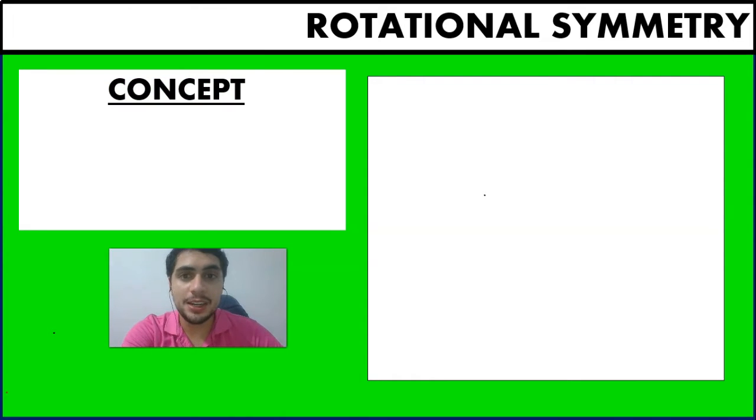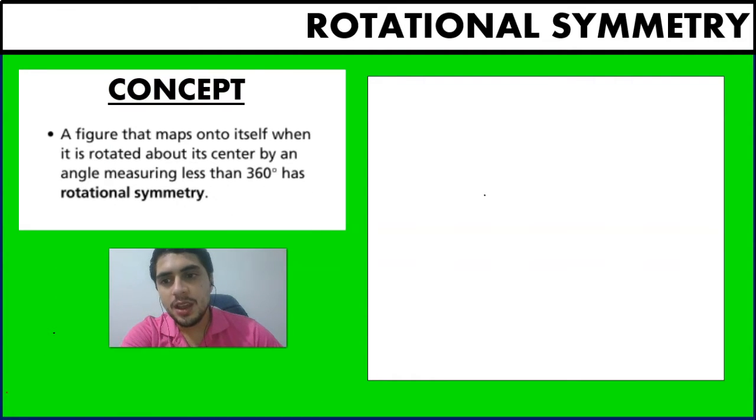Okay guys, so the first thing we're going to be taking a look at of course is this concept. So a figure that maps onto itself when it is rotated around its center by an angle measuring less than 360 degrees has rotational symmetry.